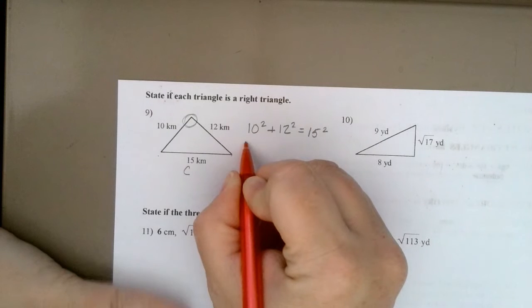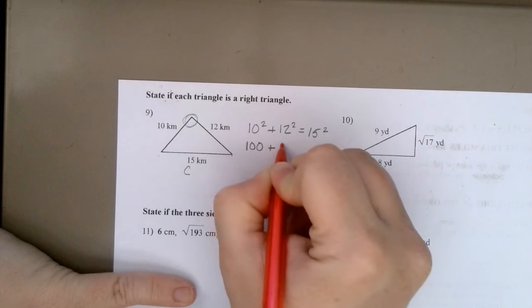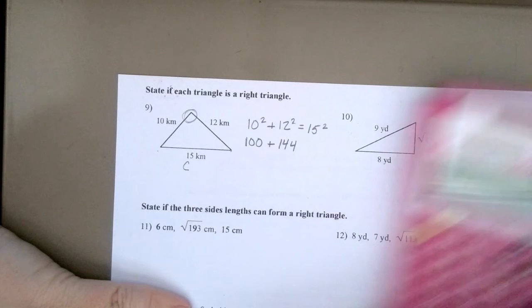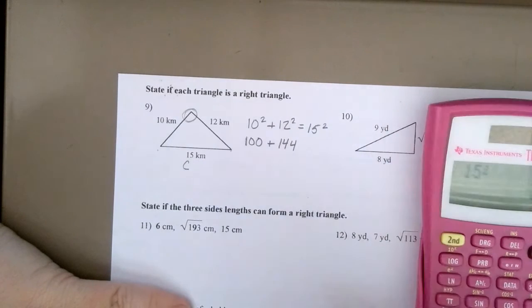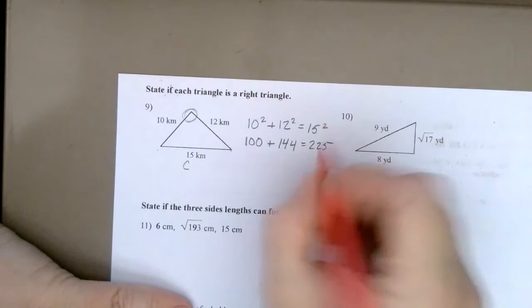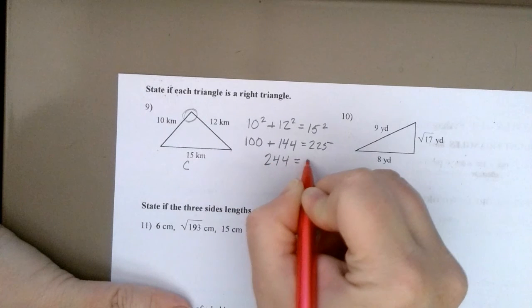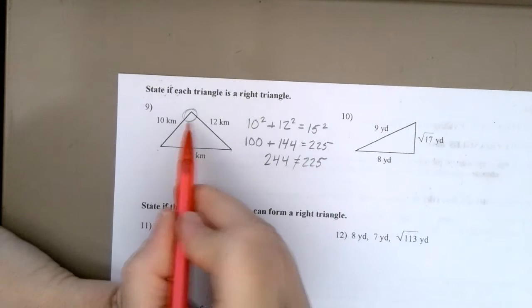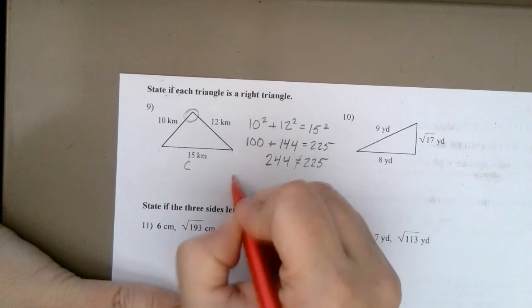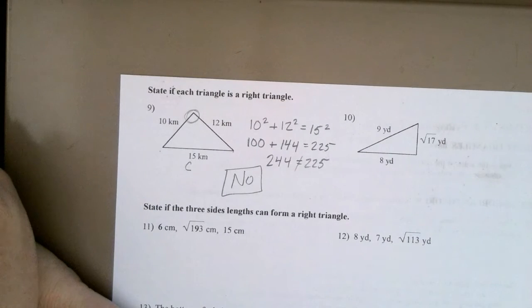10 squared is 100. 12 squared is 144. And 15 squared? 225. Is 100 plus 144, 225? Isn't this 244? That does not equal 225. So, even though that looks like it could be a right angle, it's not. So, is it a right triangle? No.